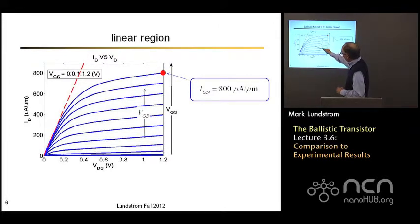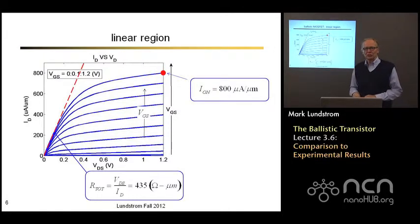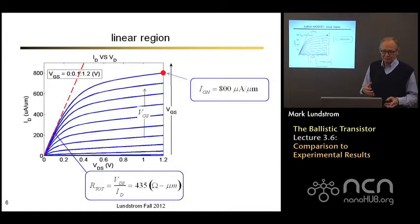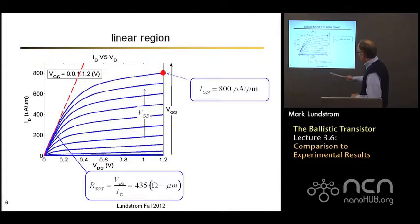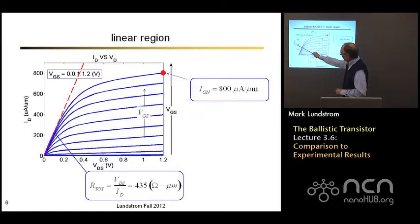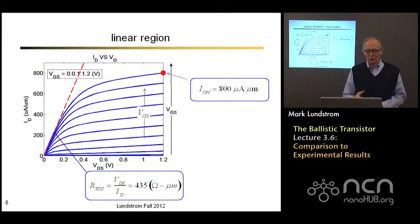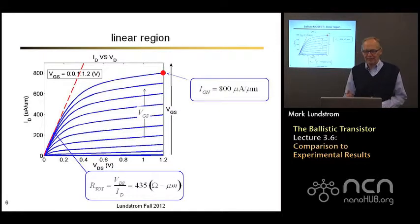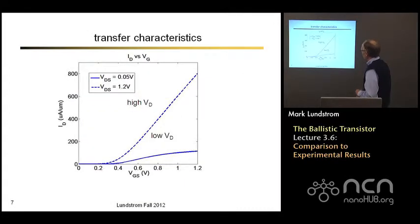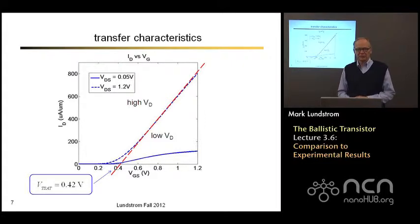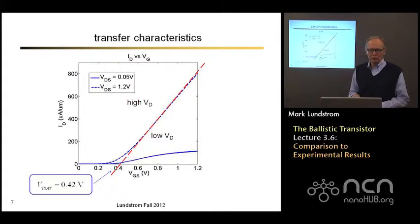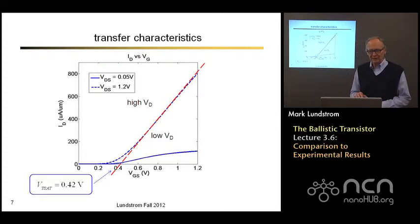Looking at the slope under the highest VDS in the low VDS regime gives us the total resistance between source and drain, which is the sum of channel resistance and series resistance. Taking one over that slope, and expressing resistance as ohm-micrometers, we get 435 ohm-micrometers — so a one-micrometer-wide MOSFET has 435 ohms, a two-micrometer-wide one has half that. From the transfer characteristics under low and high VDS, we can deduce a saturation threshold voltage VT_sat of about 0.42 volts. This relatively high threshold voltage is why on-current is a bit lower, but it makes this a low-leakage device with low off-current.